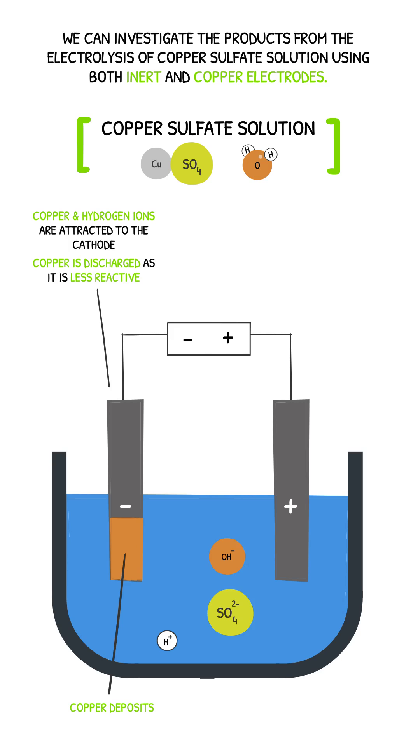At the anode, both the sulfate and hydroxide ions are attracted. The hydroxide ions are oxidised, losing one electron to form oxygen gas and water.